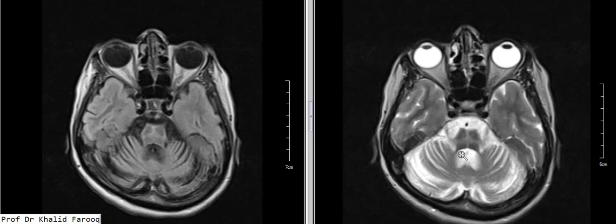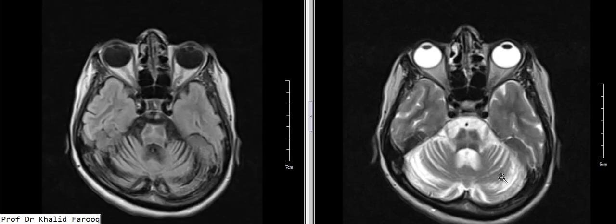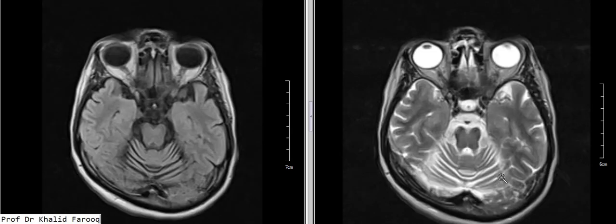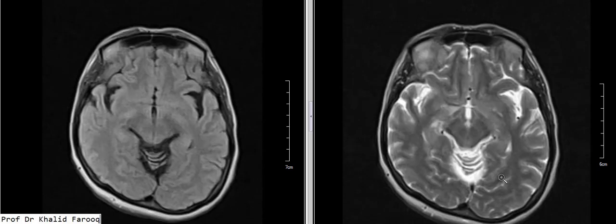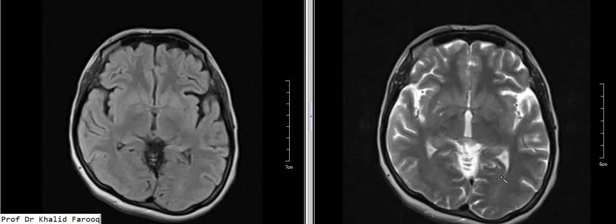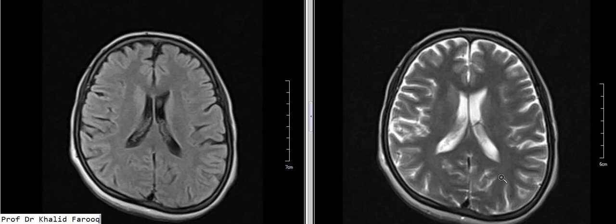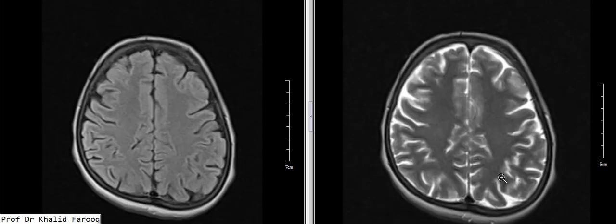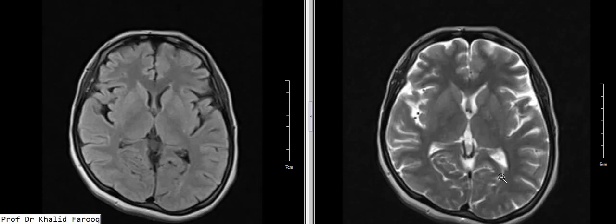We can also see there is significant reduction in the bulk of the pons and middle cerebellar peduncles. So this is a typical example of olivopontocerebellar atrophy. Here we see brain parenchyma in the supratentorial compartment which is normal.